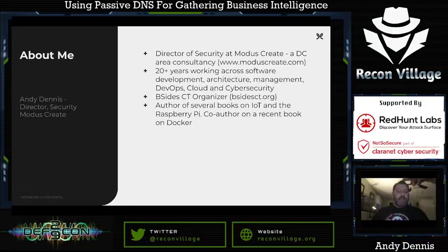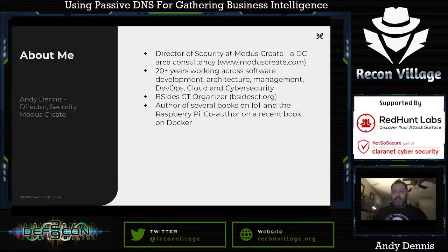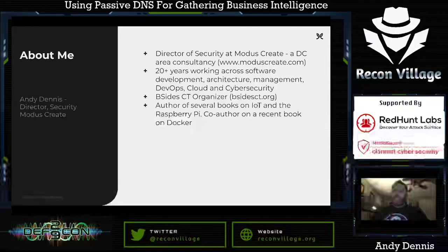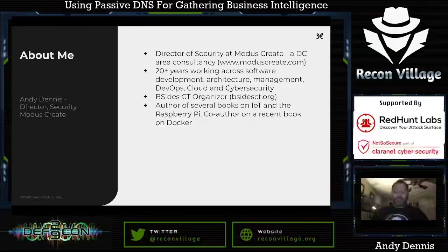A little bit about me — my name is Andy Dennis. I'm Director of Security at Modus Create, a DC area consultancy. We work across multiple fields: software engineering, cloud architecture, cybersecurity. Over the past 10 years we've probably worked on it if it's an area of technology. You can learn more at moduscreate.com. I have 20 years working across software development, architecture, management, DevOps, cloud, and cybersecurity. In my spare time I'm an organizer with B-Sides Connecticut at bsidect.org, hoping to hold a hybrid conference this November. I'm also the author of several books on IoT and the Raspberry Pi, and recently co-authored a book on Docker called Docker for Developers.